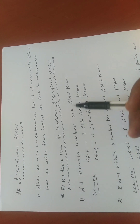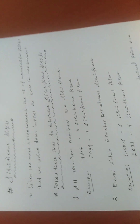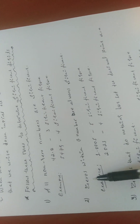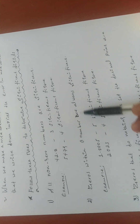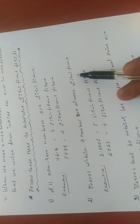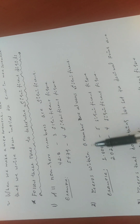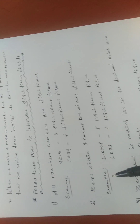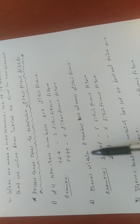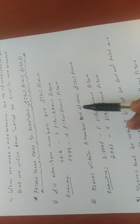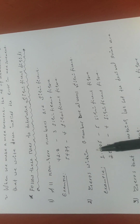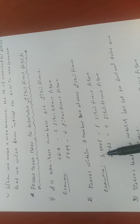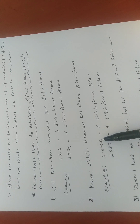The second rule: zeros within a number are always significant. This means zeros between non-zero digits are significant. For example, 1.00005 — the zeros between the non-zero digits are significant.